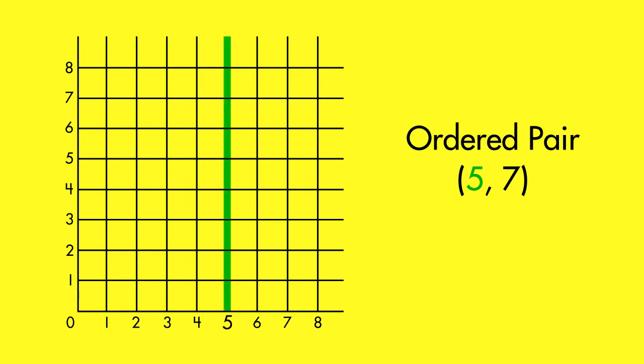The second number of an ordered pair, the y-coordinate, tells us how far to move from the origin along the y-axis. To find the 7 for this ordered pair, we count 7 places along the y-axis. Then mark the point at (5, 7).